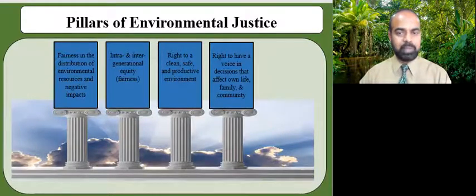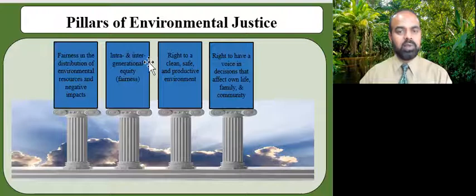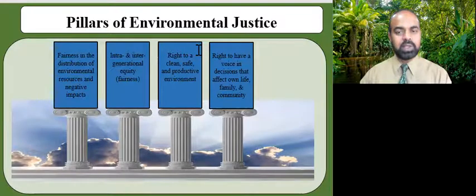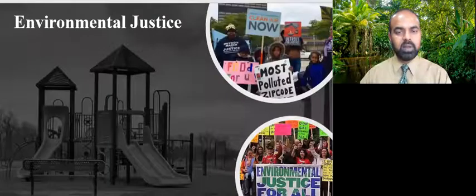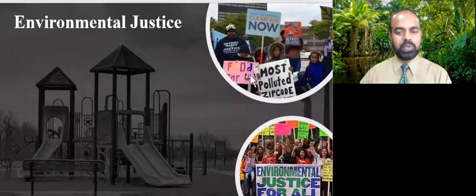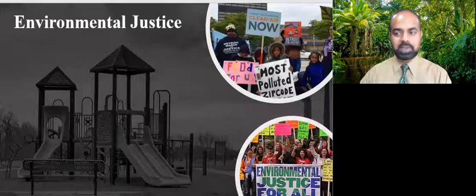There are four pillars of environmental justice. First, fairness in the distribution of environmental resources and negative impacts. Second, intra- and inter-generational equity or fairness. Third, the right to a clean, safe, and productive environment. And the fourth pillar, the right to have a voice in decisions that affect one's own life, family, and community. Community activists and children living in polluted neighborhoods and communities are protesting in the streets and demanding environmental justice.